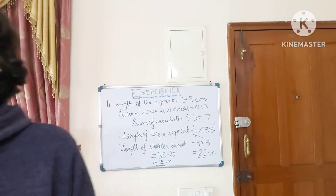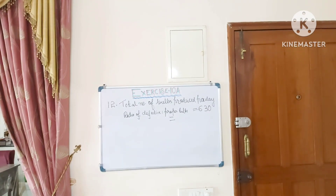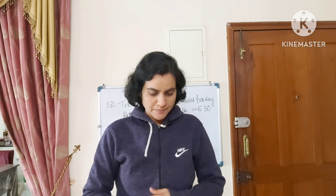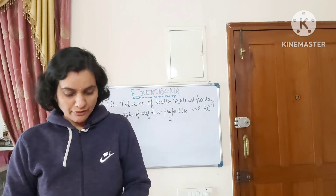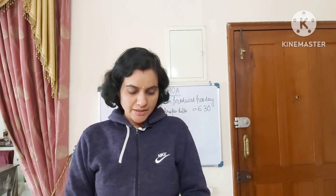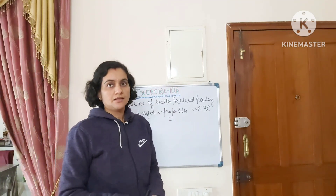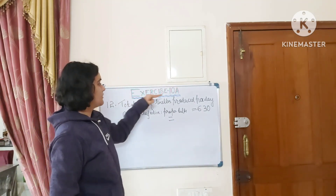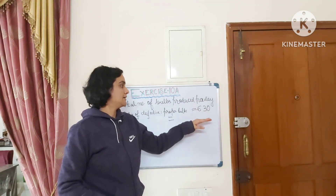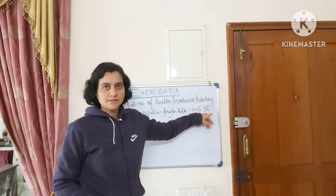Moving to question number 12: a factory produces electric bulbs. If one out of every 10 bulbs is defective and the factory produces 630 bulbs per day, find the number of defective bulbs produced each day. Given: total number of bulbs produced per day is 630.